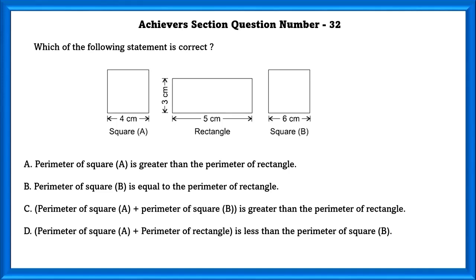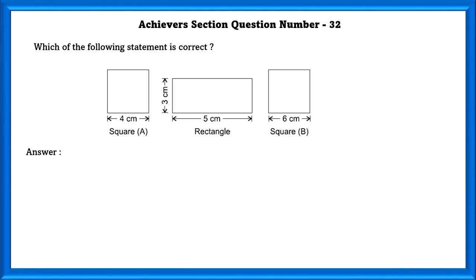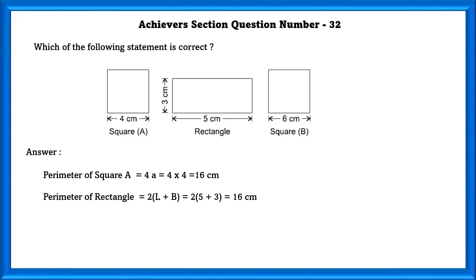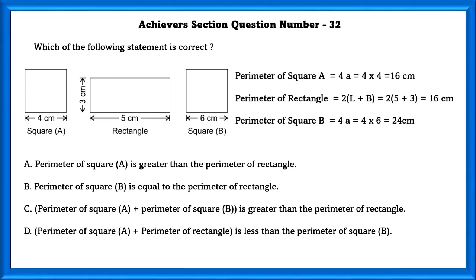Mathematics question number 32: Which of the following statements is correct? The perimeter of square A equals 4a, which is 4 into 4, that is 16 cm. The rectangle equals 2 into (l plus b), which is also 16 cm. Perimeter of square B equals 4a, which is 24 cm. Option A — perimeter of square A is greater than perimeter of rectangle — wrong, they are equal. Option B — perimeter of square B equals perimeter of rectangle — wrong. Option C — perimeter of square A plus perimeter of square B is greater than the perimeter of the rectangle — correct. Option D — perimeter of A plus perimeter of rectangle is less than perimeter of square B — wrong. The correct answer is C.